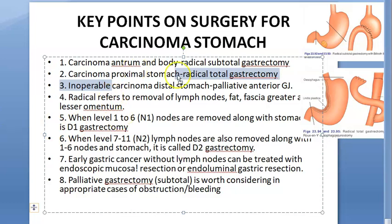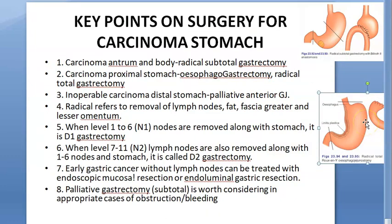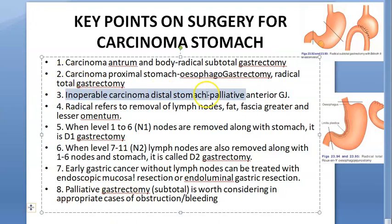This procedure is esophagogastrectomy — removal of the entire stomach and lower end of the esophagus with regional lymph nodes, followed by esophagojejunal anastomosis.